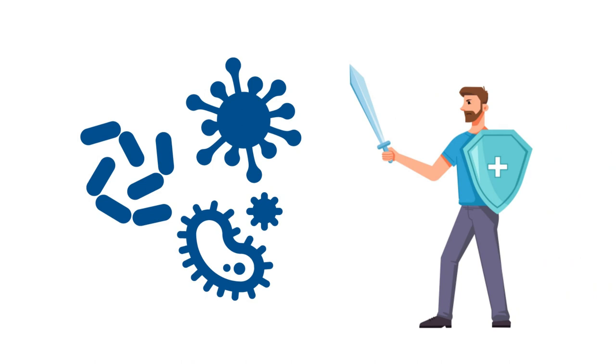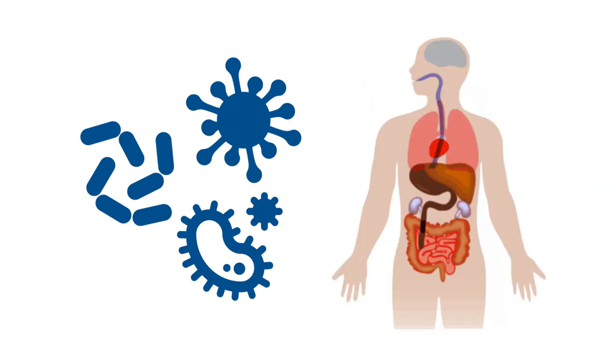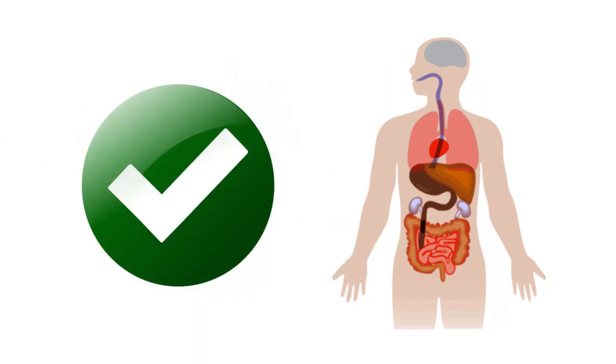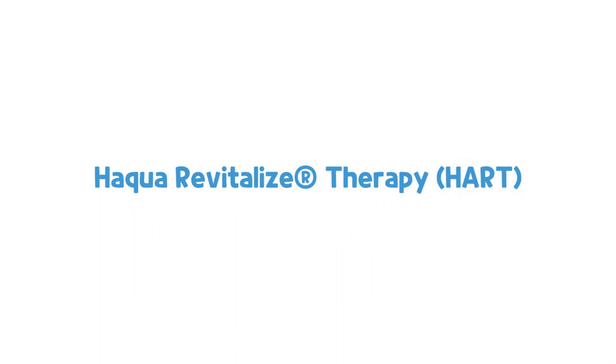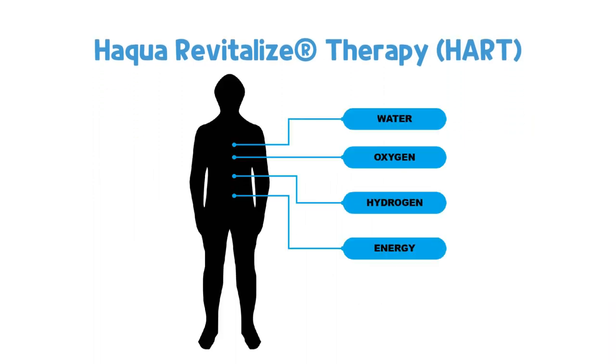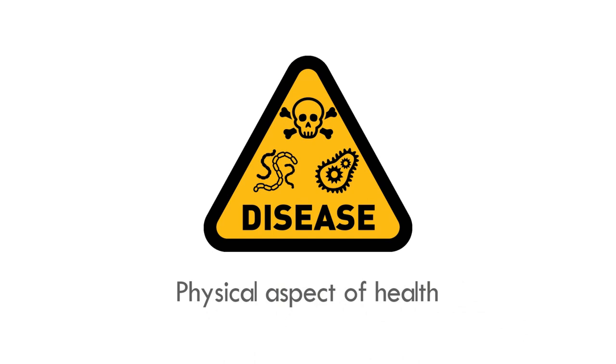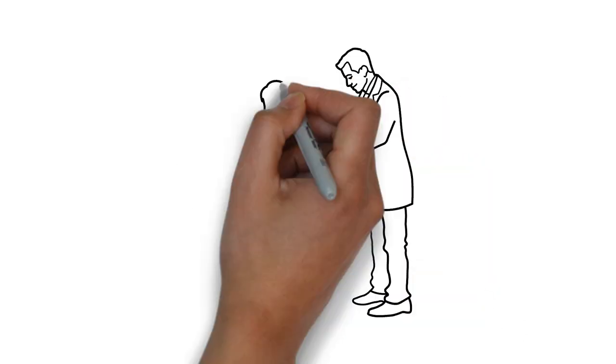Any dysfunction of the human body, whether in the cells, tissues, or organs, would result in the body trying to fix it. Each of the human organs, cells, and tissues play a vital role in trying to regulate the system back to its state of maximum performance. Haqua Revitalize Therapy plays the most crucial role by revitalizing and energizing the body with its essential fuels or the Four Essential Elements of Life.